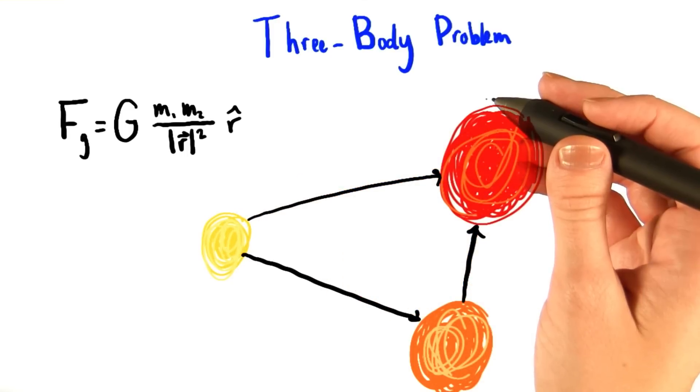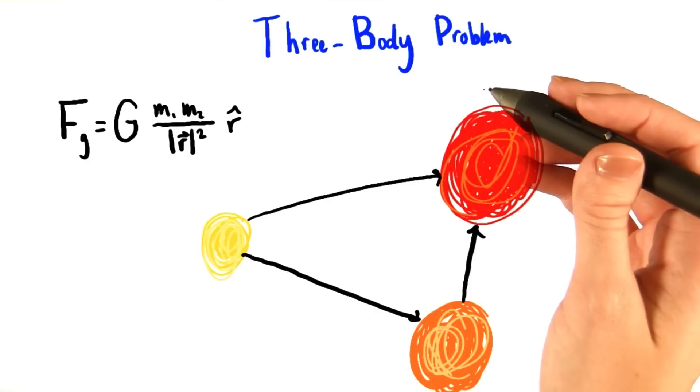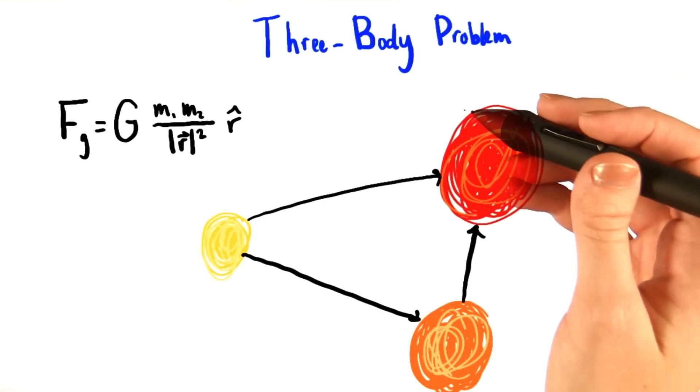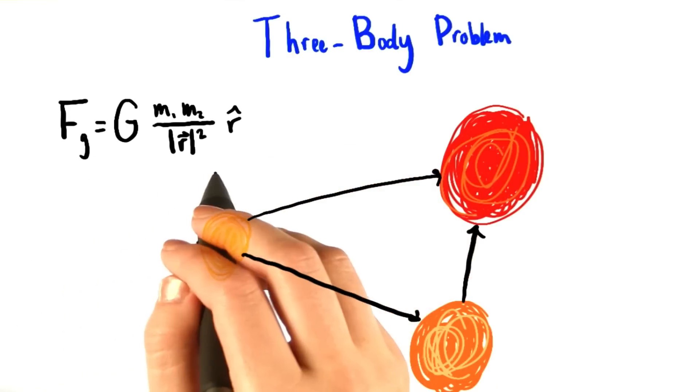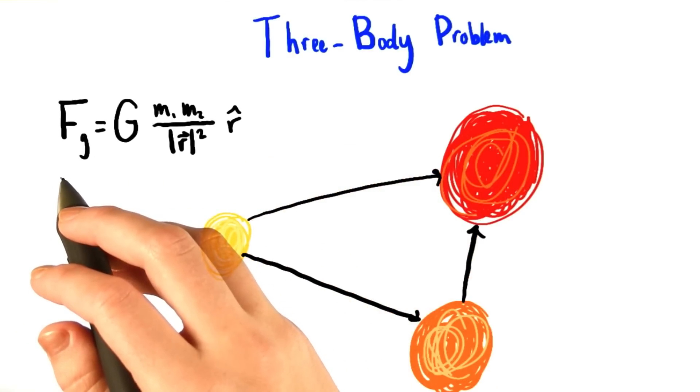Given a certain initial 3D configuration of these stars, we want you to figure out how their position and velocity change with time. One piece of information that's going to be very important is this equation of the gravitational force between two bodies, which you should remember from our earlier units.